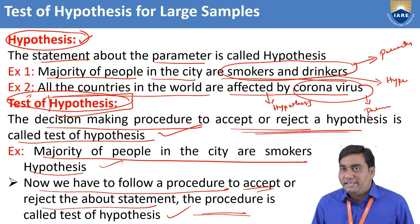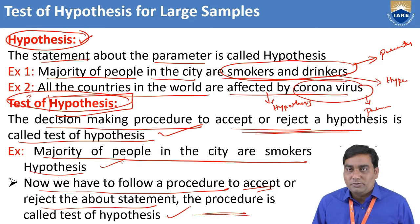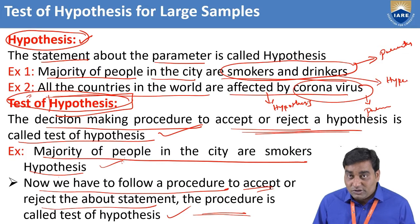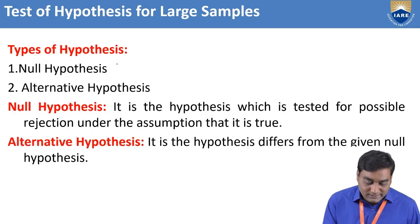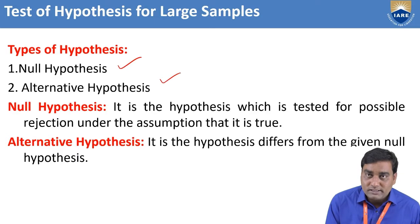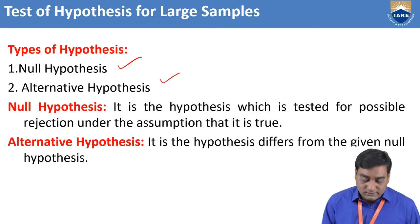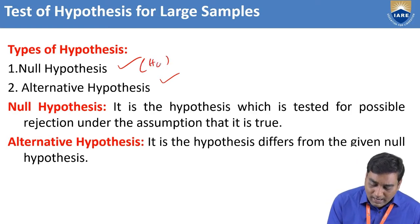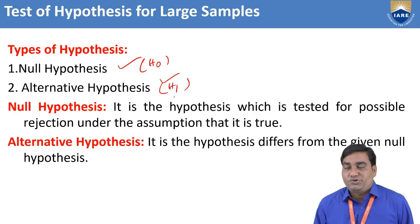In this slide we discussed: any statement is known as hypothesis, and the procedure to accept or reject that statement is known as test of hypothesis. In hypothesis, there are two types: null hypothesis and alternative hypothesis. Null hypothesis is denoted by H₀ and alternative hypothesis is denoted by H₁.